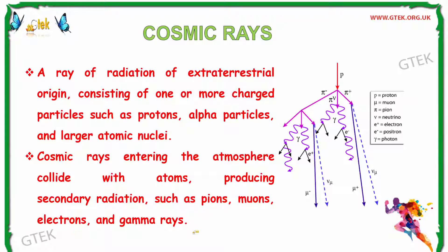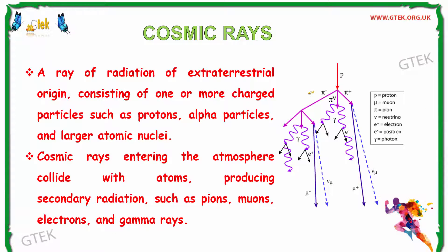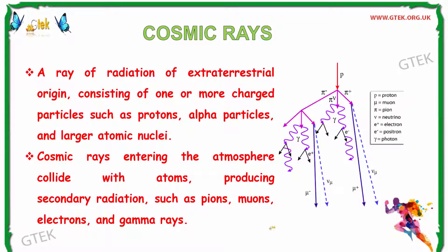muons, electrons and gamma rays. You can see in the picture — the right side shows you about the Cosmic Rays that consist of protons, muons, pions, neutrons, electrons, positrons, and photons.